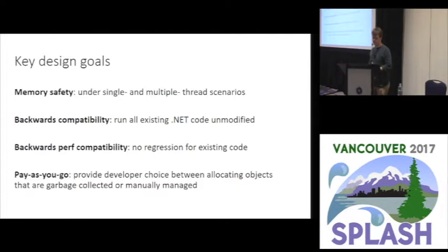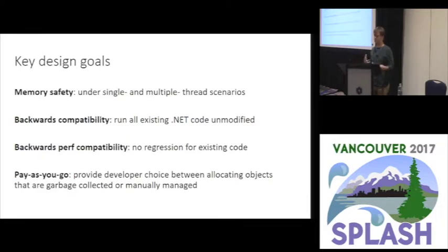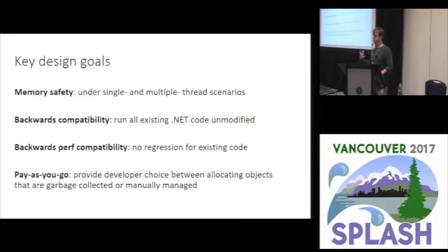Key design goals: we want to be memory safe — single-threaded, multi-threaded, it has to be safe. It's a safe language, we can't compromise on that. We have to be backwards compatible — we have to run all existing code, so we can't just throw away the GC. We also can't regress performance of existing code, which means we can't do anything that's on a path that already exists. And we want it to be pay-as-you-go: if you use this feature you get benefits, but you can just opt in in little places and do profile-guided optimization.